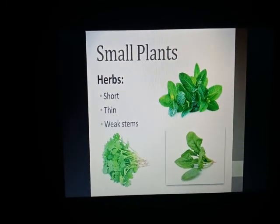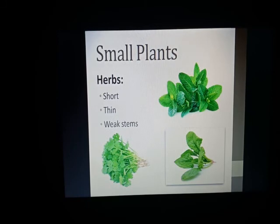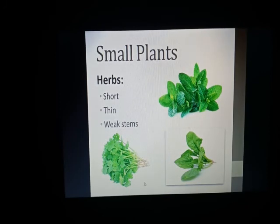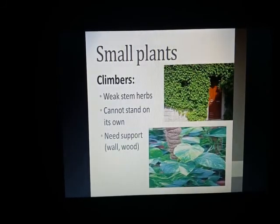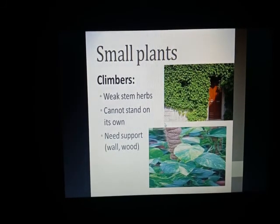The next kind of small plants are herbs. Herbs are very short, very thin, and they have weak stems — they can be broken easily. Examples of herbs are mint, coriander, and spinach.